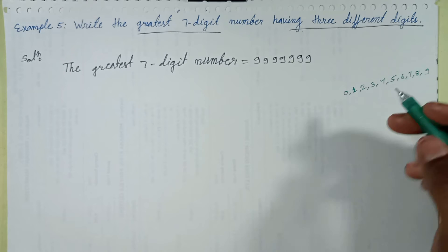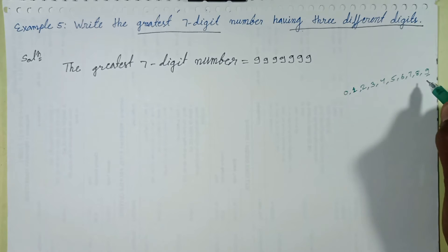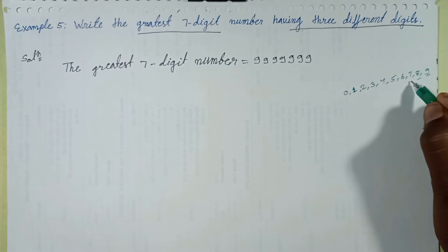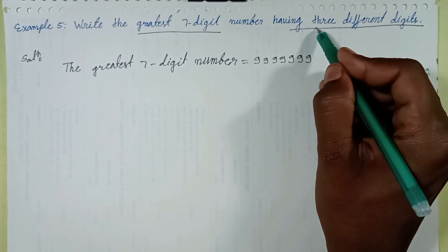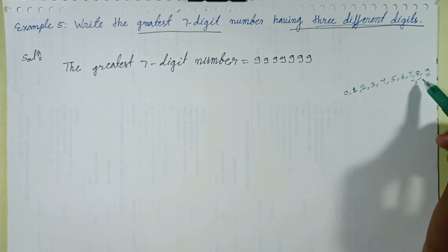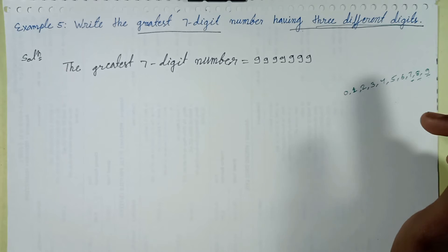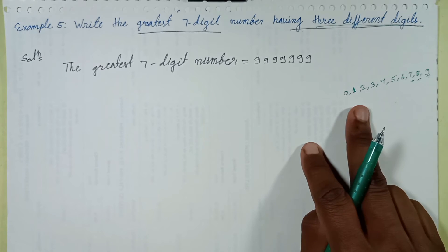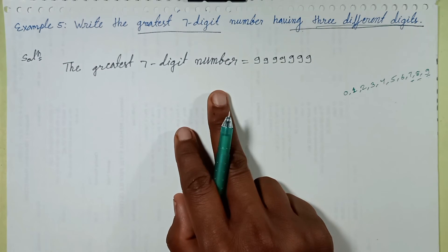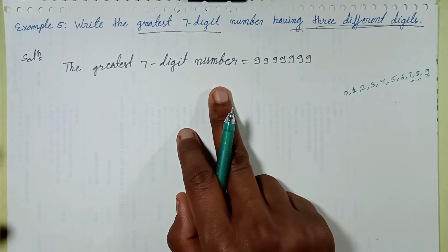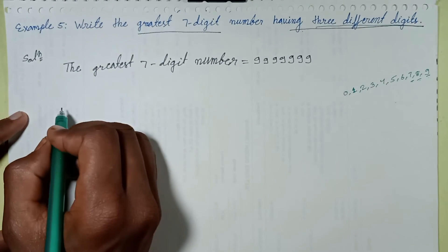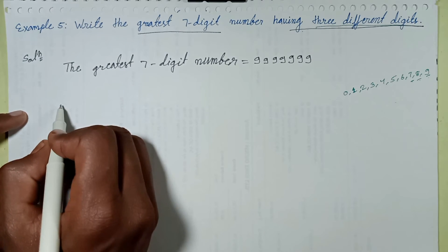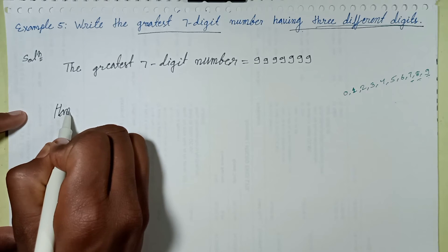The greatest value is nine. In decreasing order: ones, tens, hundreds — find three different digits. The greatest three digits in decreasing order, not increasing. Only decreasing. With the greatest digit number, let's solve this question.